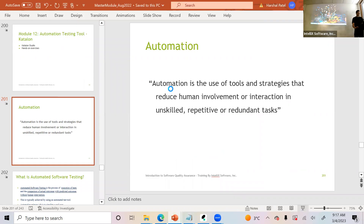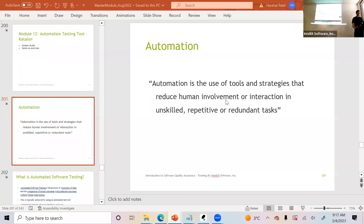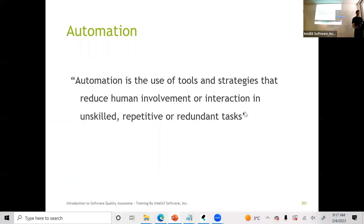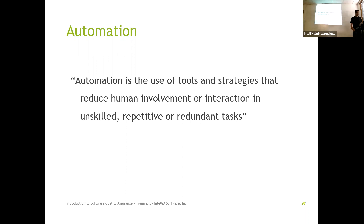Let's look at the definition again. Automation is the use of process strategies that will reduce human intervention in unskilled, repetitive, and redundant tasks. When we say unskilled, it's no brainer — you are just following the steps, not using any logic, just comparing what's in the step with what you see in the output.